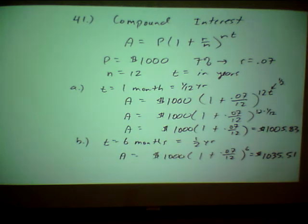And I end up with $1,035.51. So after six months, if I start out with $1,000 now, I've got $1,035.51. So I've made $35.51. So you see how that works.